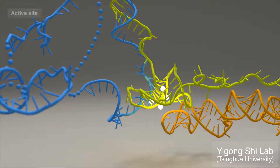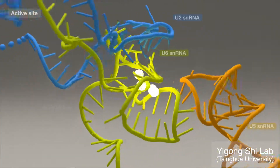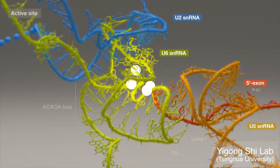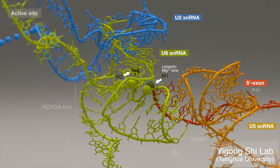The active site incorporates U2-U6 duplex and U5 nucleotides that orchestrate substrate anchoring, while catalytic magnesium ions stabilize or activate reactant moieties during catalysis.